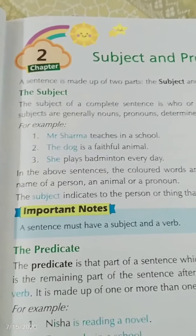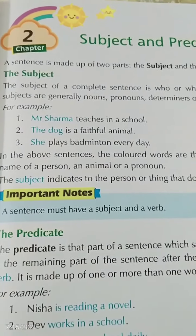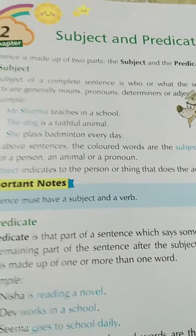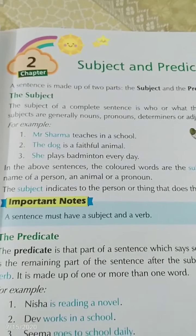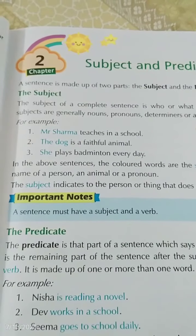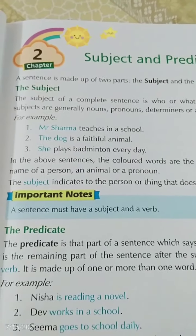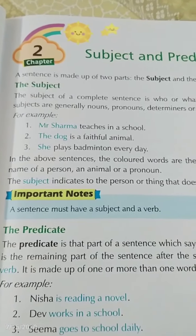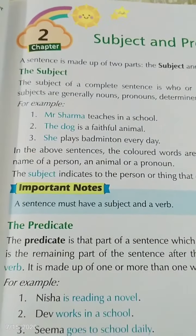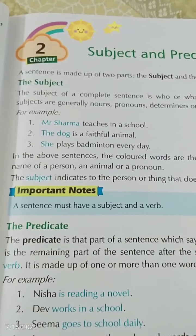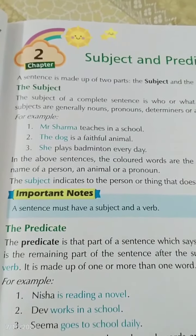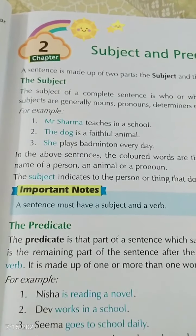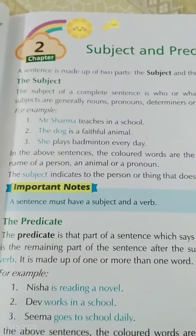A sentence is made up of two parts: the subject and the predicate. As we have read earlier, a sentence is made up of words by which we can convey a message. We can talk to each other — with your friends, with your parents. Whatever sentences we are using in our day-to-day life, we will now read about subjects and predicates.